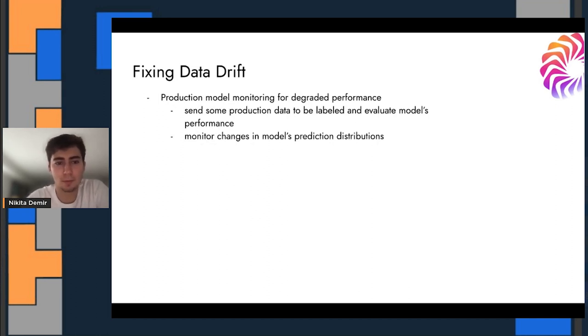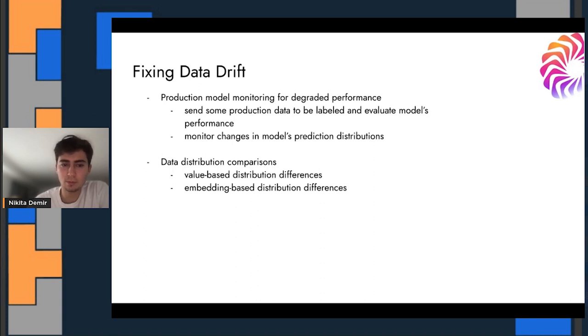How does one fix data drift? Production model monitoring can give you an estimate of when the model's performance is degrading. So when that happens, you can send some of that production data to be labeled and then reevaluate your model's performance on it, see whether those models predictions lined up with the overall like f1 and performances you're expecting. You can also monitor changes in the model's prediction distributions. So perhaps its confidence in this class has decreased dramatically from when it was trained on it. And that could be an early sign that something is happening in the data.